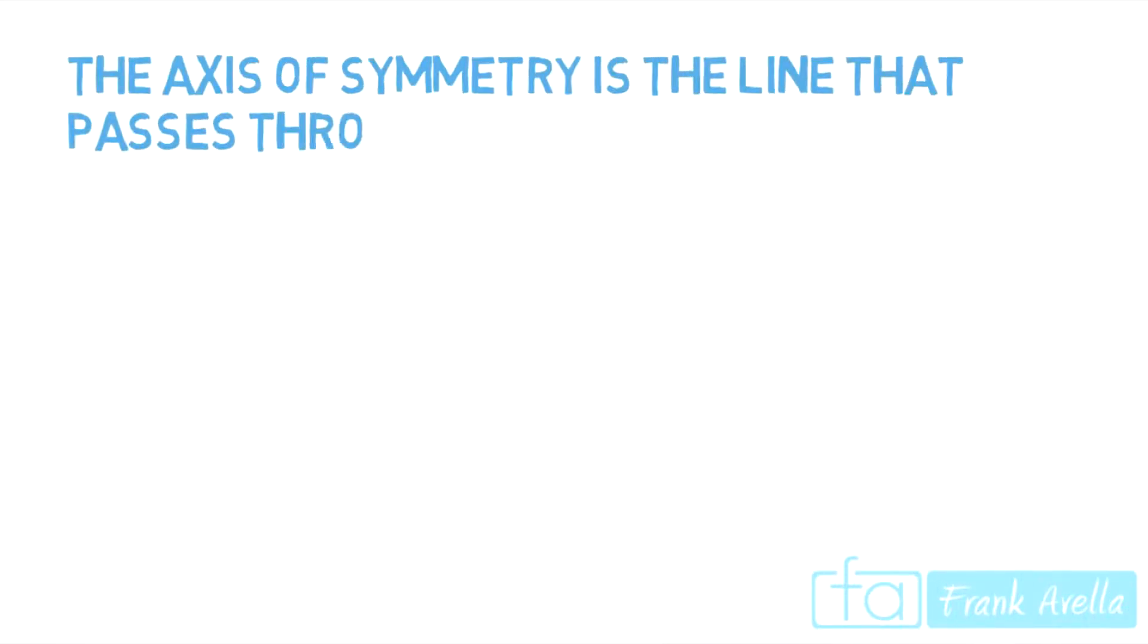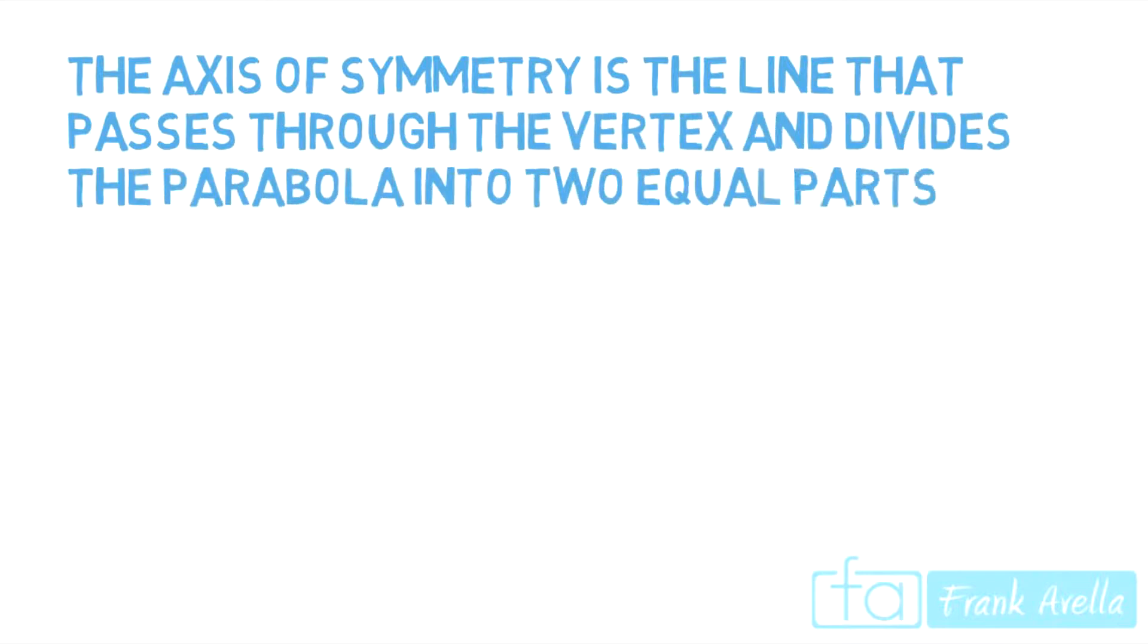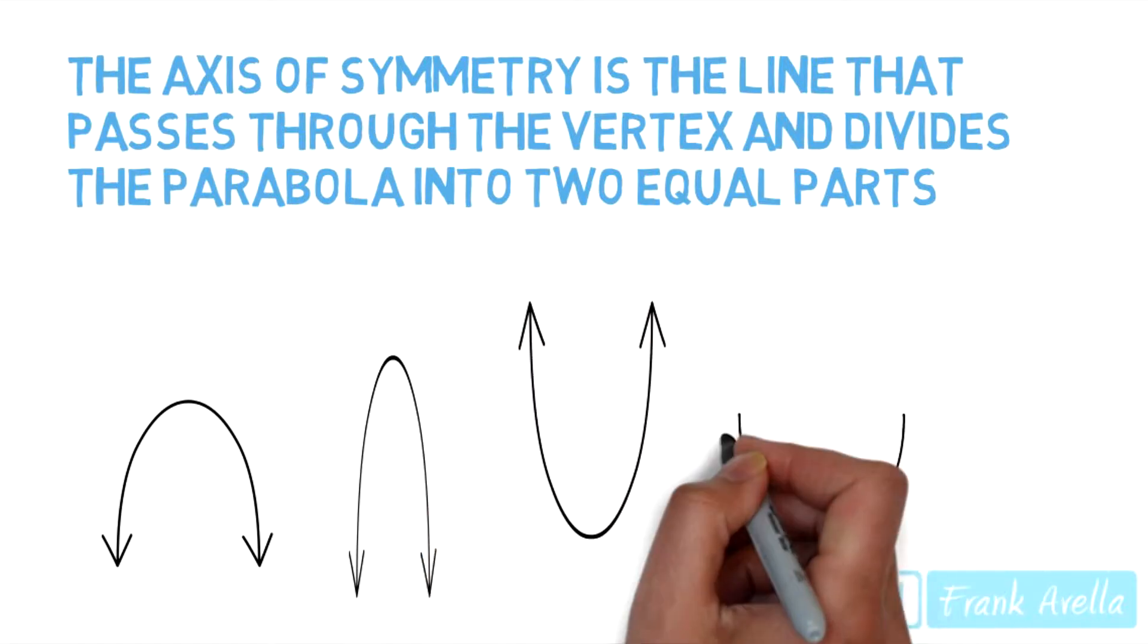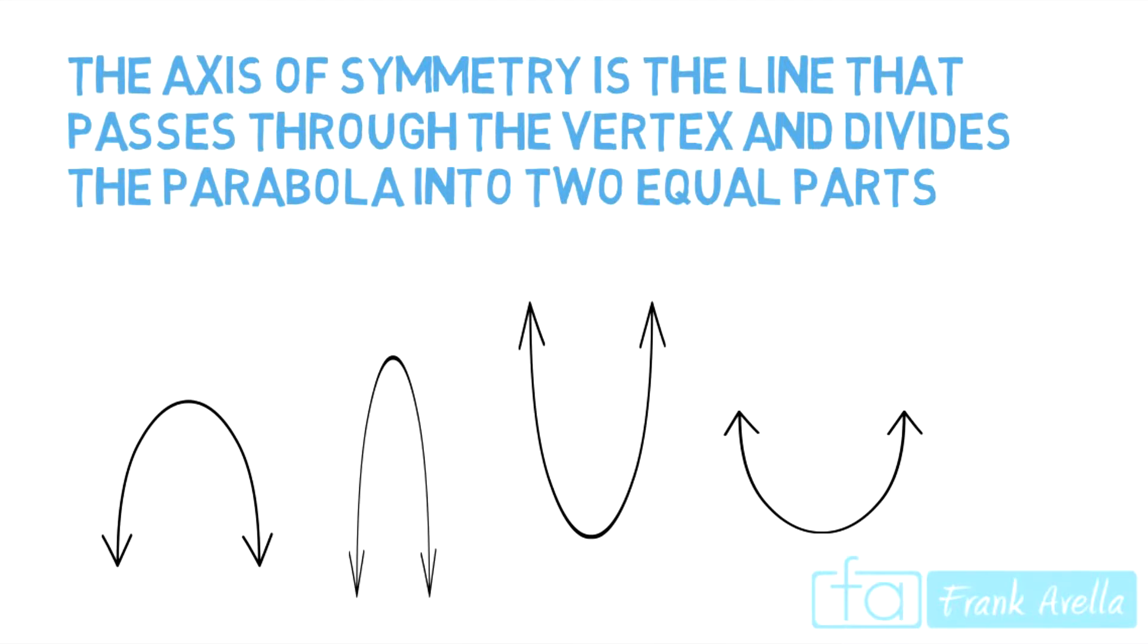Now the axis of symmetry is the line that passes through the vertex and divides the parabola into two equal parts. So here are a couple of parabolas, all u-shaped like always.